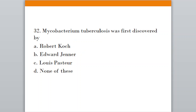Question number thirty-two: Mycobacterium tuberculosis was discovered by. Option A, Robert Koch; Option B, Edward Jenner; Option C, Louis Pasteur; Option D, none of the above. The correct answer is option A, Robert Koch.